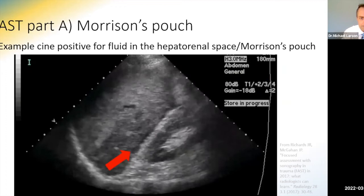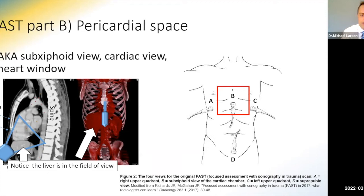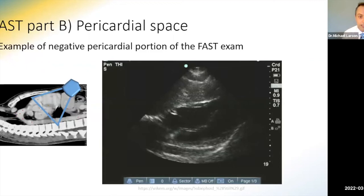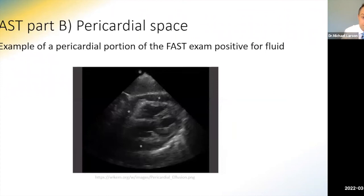The next part of the FAST exam is the subxiphoid fluid view or cardiac view. The transducer is placed sub-xiphoid to peek at the heart, and the liver will be in the field of view. A negative pericardial FAST exam shows a little liver up top and anechoic blood inside the heart chambers, but no fluid around the heart. A positive pericardial FAST exam shows anechoic pericardial fluid surrounding the heart — the authors typically mark it with stars. A real-time cine clip demonstrates pericardial effusion.